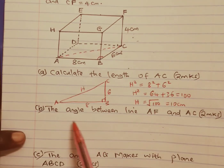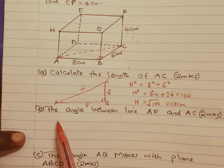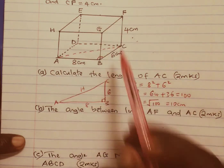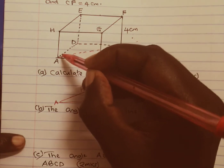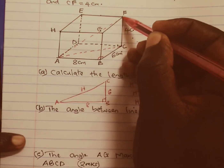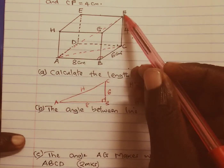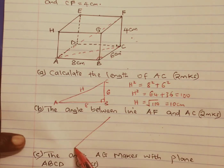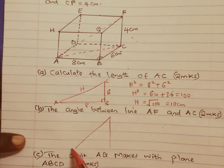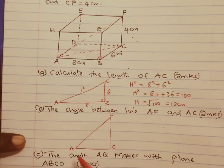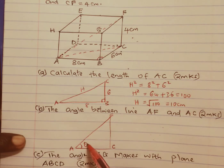We move down to part B. The question asks for the angle between the line AF and AC. We can draw a broken line towards AF and sketch this triangle. So we have point A, point F and point C, and the angle between AF and AC is the angle we can call theta.